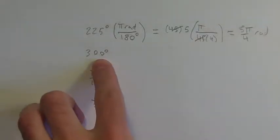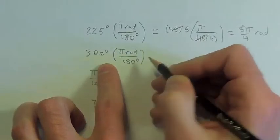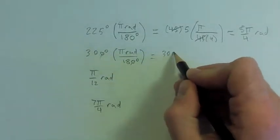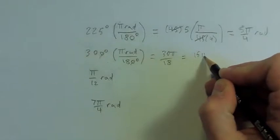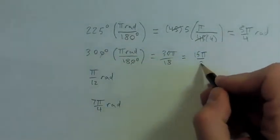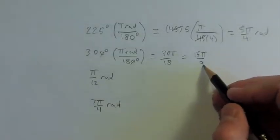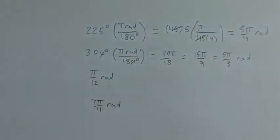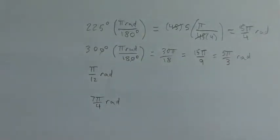We'll do the same thing with 300 degrees. So 300 degrees multiplied by π radians over 180 degrees. This one is a little nicer — I can cancel out the zeros to get 30π over 18. We can take 2 out of both to get 15π over 9. Then we can take 3 out of both and get 5π over 3. So I showed a few more steps there — you can either go straight to the simplified form or do it step by step as you go.